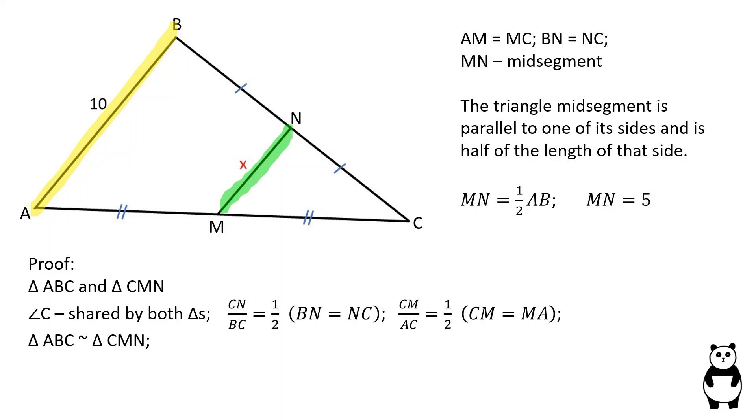Therefore, the third pair of corresponding sides have to be proportional as well. MN over AB is equal to 1 over 2.